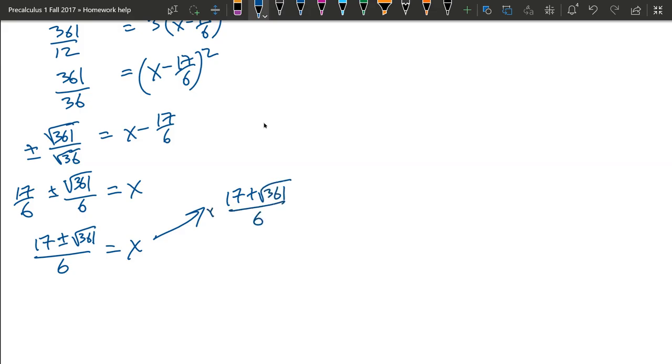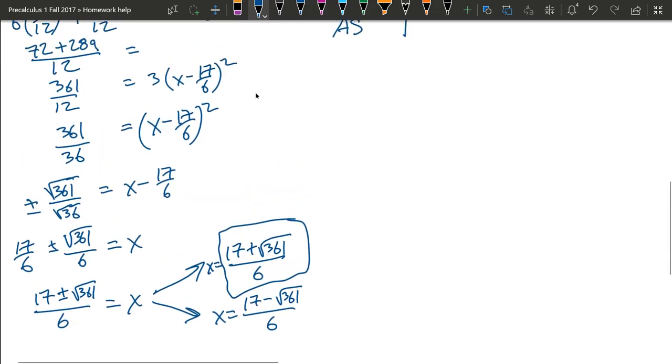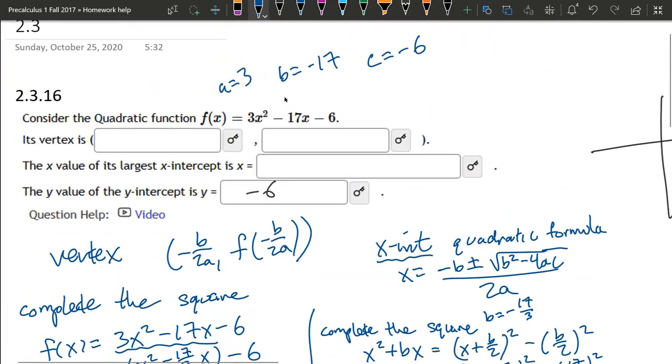So there's two x values, plus or minus. So let's write those two down. We'll do the plus one up top. 17 plus the square root 361 over 6. That's one x value. That's the plus. The minus is 17 minus square root 361 over 6.